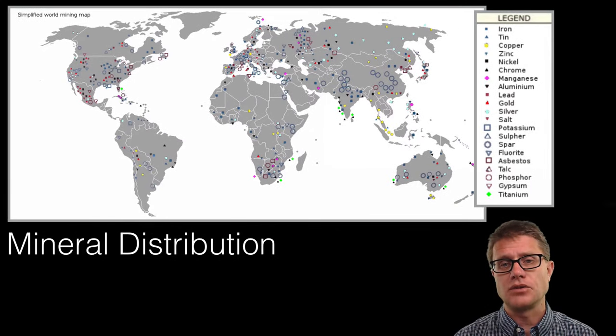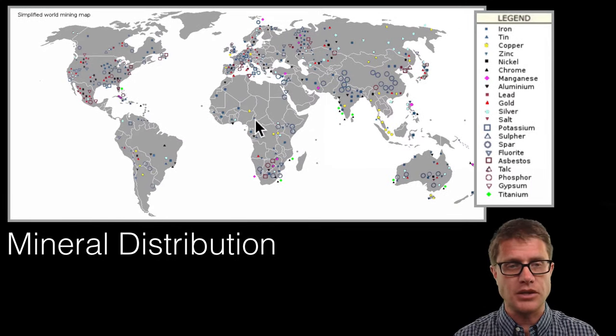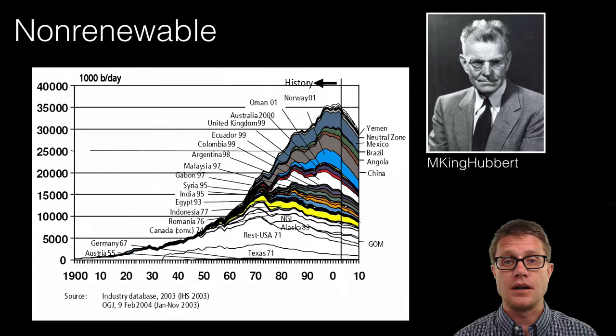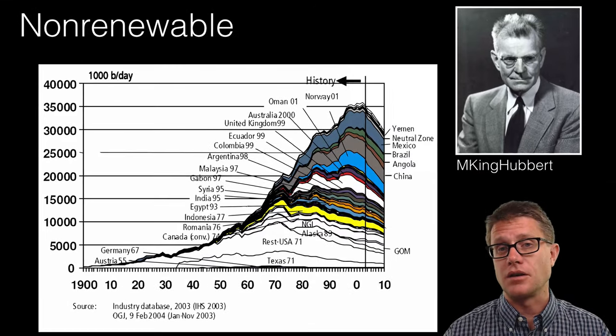This shows you the uneven distribution of those valuable minerals. So for example we might be able to find gold. But a lot of those minerals are owned privately and we do not even know where they are. The key point is that they are non-renewable.